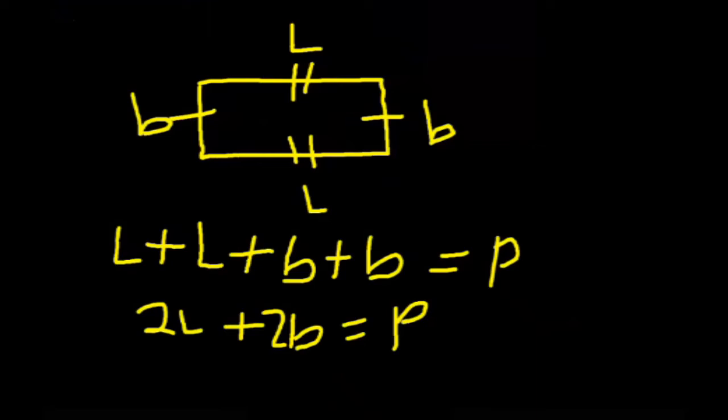Actually very easy. Factoring out the common term here, 2 is actually common. So 2 into the bracket L plus B equals P, that is our perimeter. So now we have proved that the perimeter of a rectangle is 2 into the bracket L plus B.